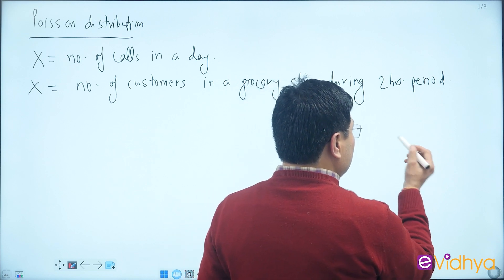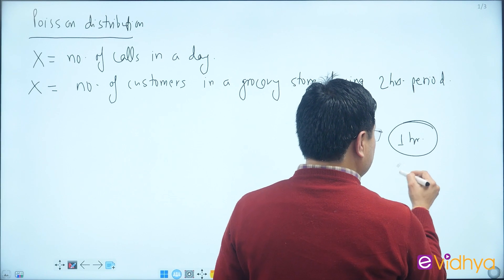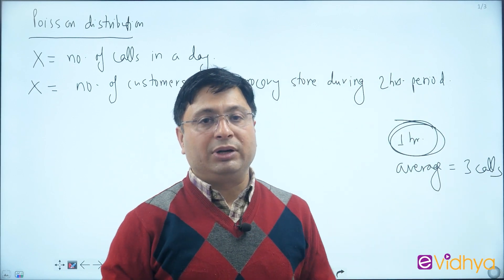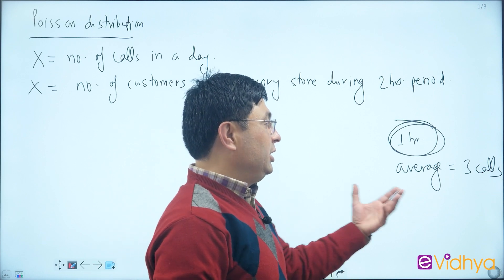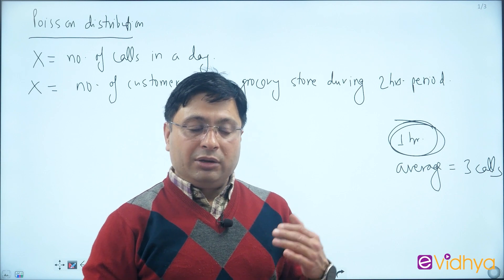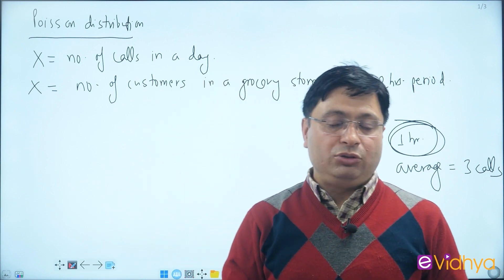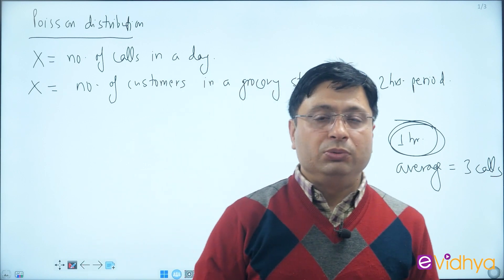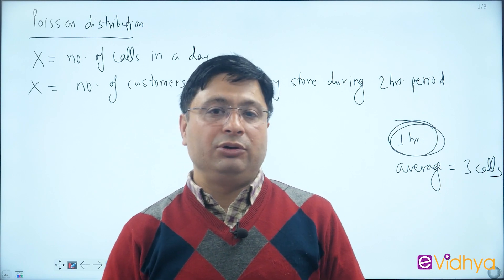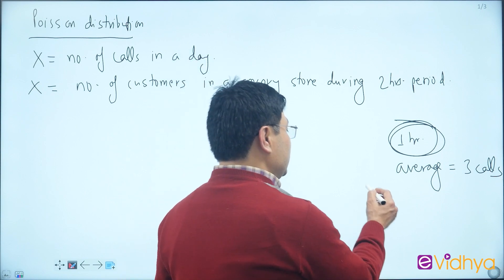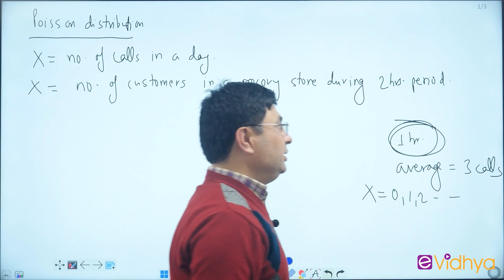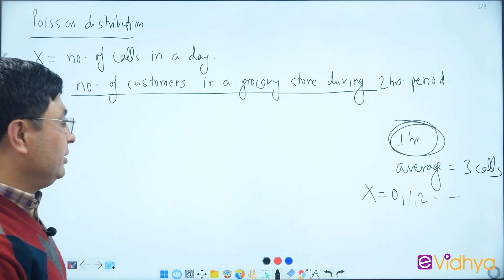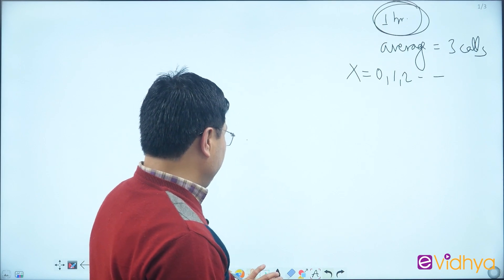In a one-hour period, suppose we have an average of three calls. In that particular hour, we need to find the probability of at least one or two calls. In binomial, X takes values 0 to n. Here, the number of calls can be 0, 1, 2, and the number of customers in a grocery store during a two-hour period could be a large number. We need to work with the definition of this distribution.